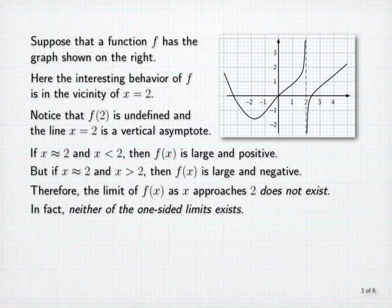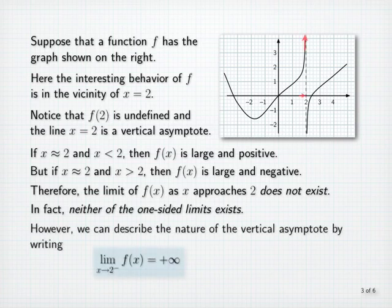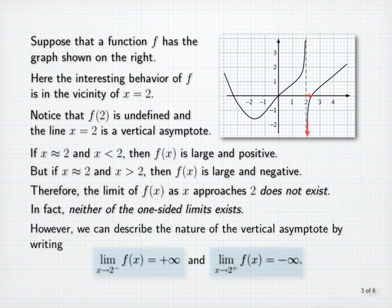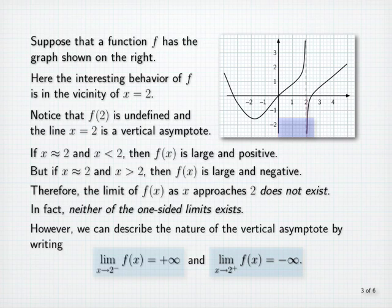Here, we say that the limit of f of x as x approaches 2 from the left is plus infinity, and we say that the limit as x approaches 2 from the right is negative infinity. The limit from the left is positive infinity because, given any positive number, no matter how large, f of x will be greater than that number for all x in a sufficiently small open interval whose right endpoint is 2. The limit from the right is negative infinity because, given any negative number, no matter how large in magnitude, f of x will be less than that number for all x in a sufficiently small open interval whose left endpoint is 2.